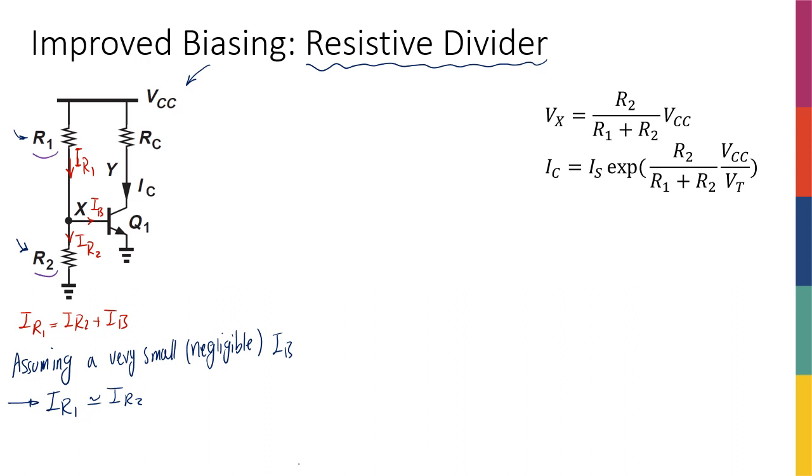let's say that this is, for example, if I realize that this is, I don't know, 1 milliamp and the IB is 10 microamps, then the second current is going to be 990 microamps.